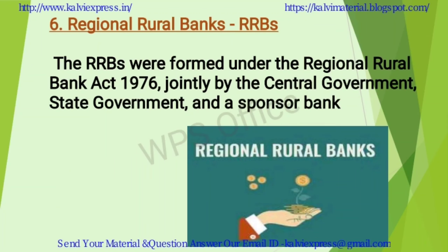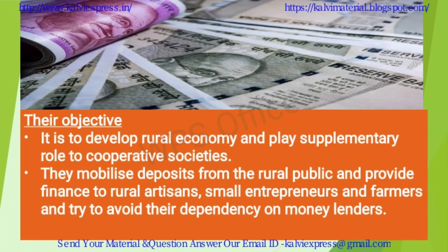The sixth type is the Regional Rural Bank, or RRB. Formed under the Regional Rural Bank Act of 1976, it was jointly established by the central government, state government, and a sponsor bank. These banks play a supplementary role alongside cooperative banks, with their main objective being rural economic development. The shared capital contributed by the sponsor bank is in the ratio of 50:15:35, making the cost of establishment very low.